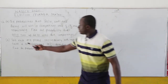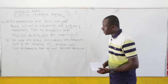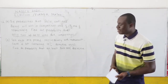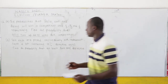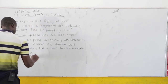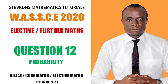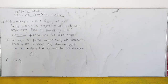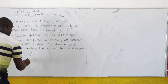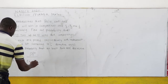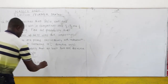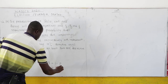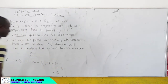Question 12B: 10 items are picked successively with replacement from a lot containing 10% defective items. Find the probability that at least 2 are defective. This is clearly a binomial distribution. Our n is 10, the probability of success p is 10%, which is 1 over 10, and q equals 1 minus p, which is 1 minus 1 over 10, giving us 9 over 10.